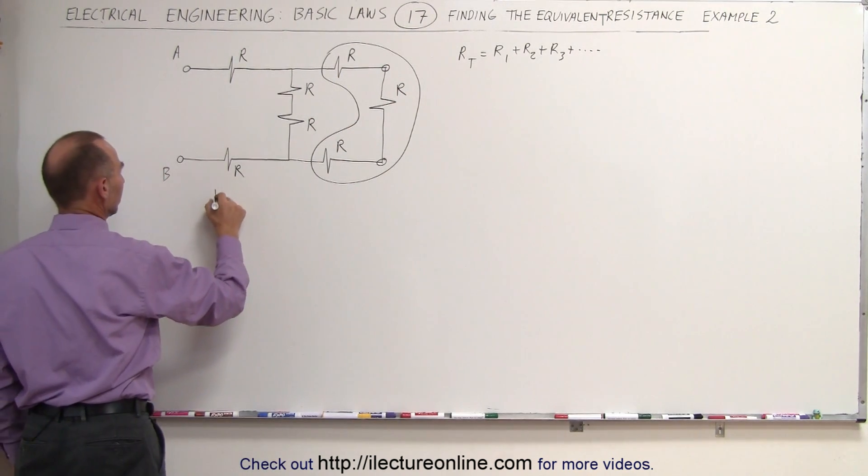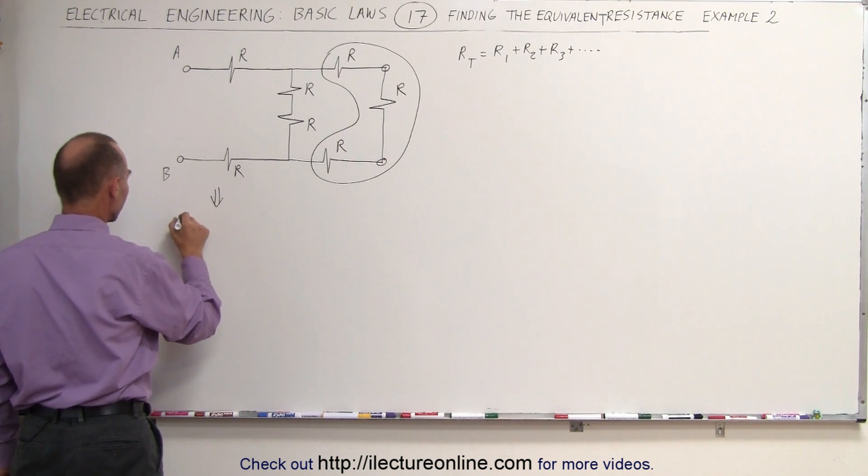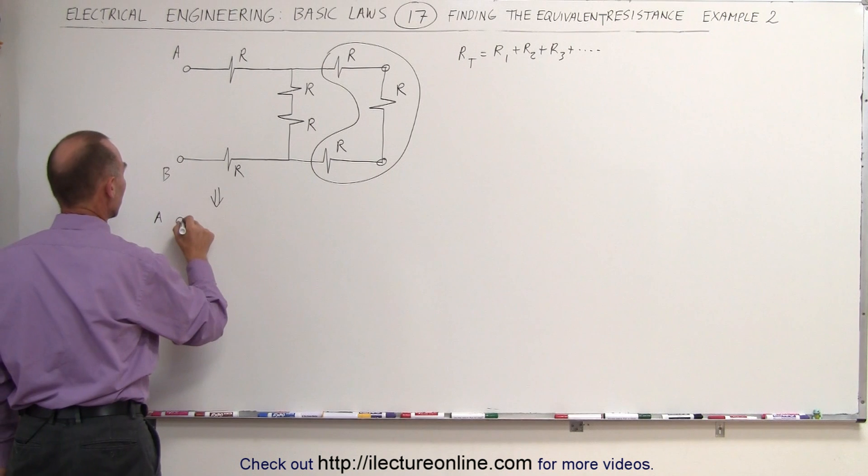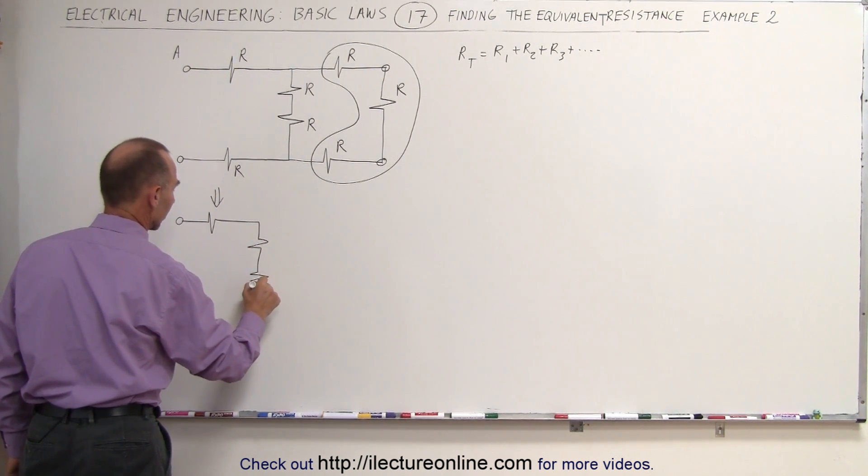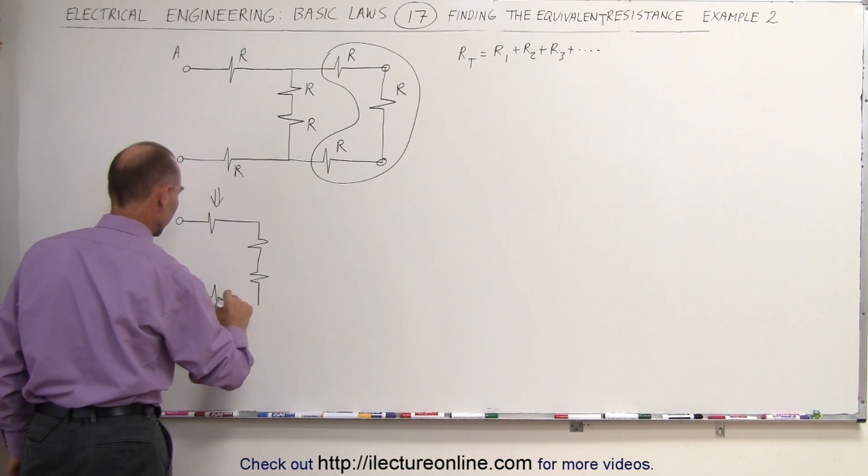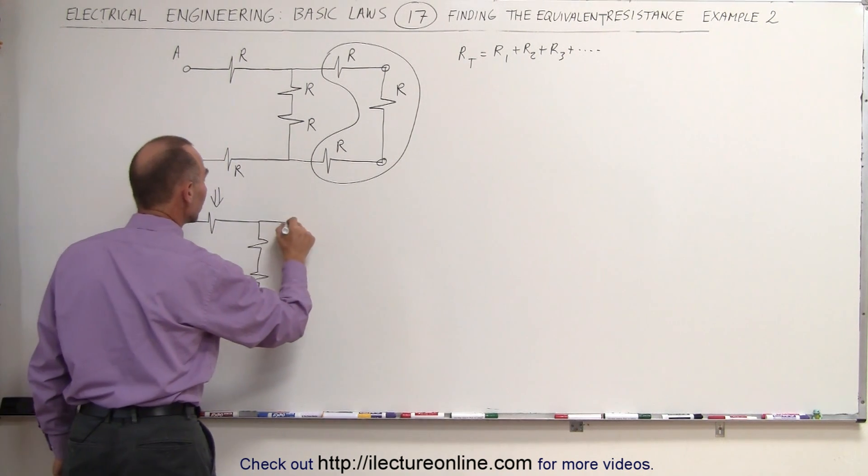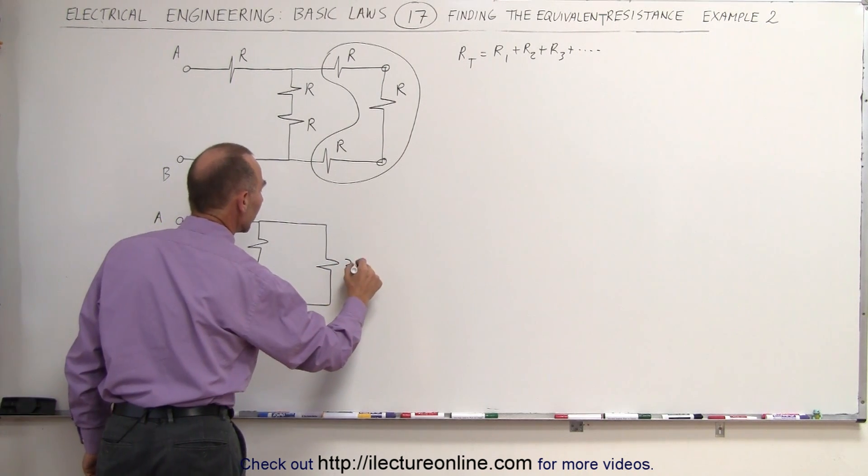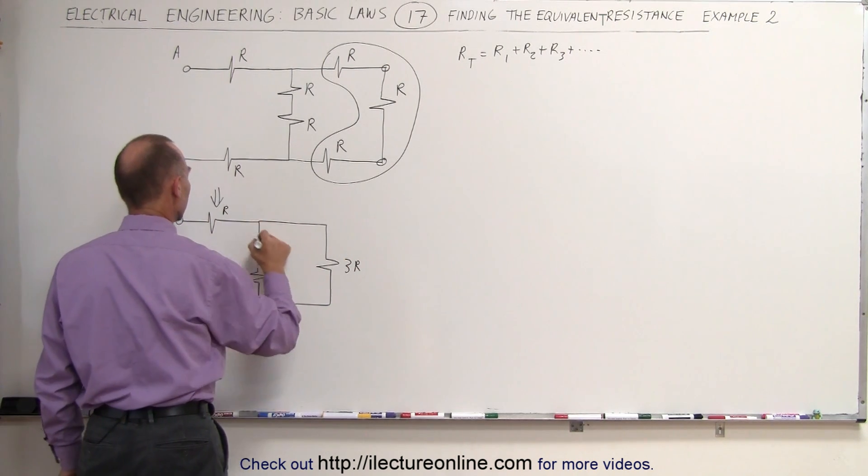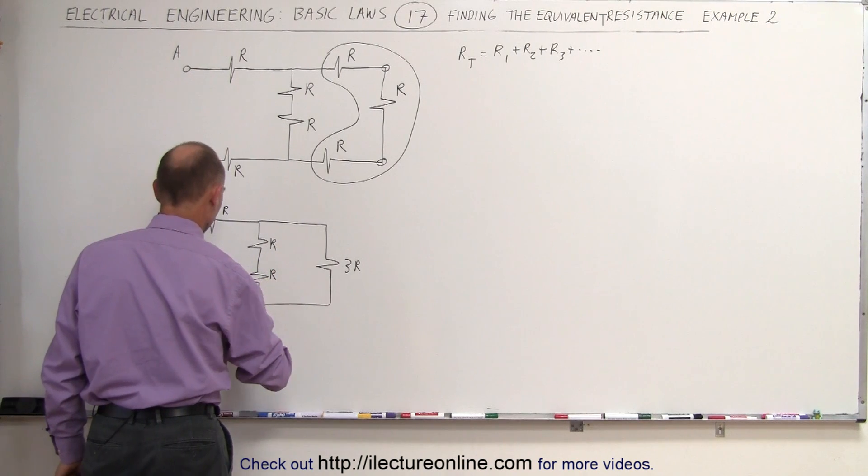We can then redraw the circuit. The circuit now looks as follows. We have A and B. We have a resistor coming out of here. We have these two resistors. And then we have this resistor. And those three then get turned into a single resistor. The value of that one now is 3R. These are still R, R, R, and R.